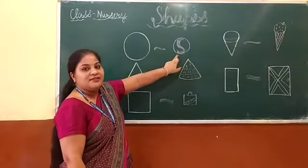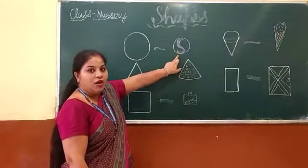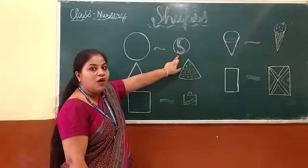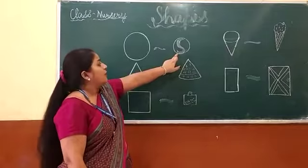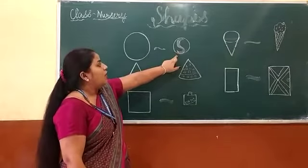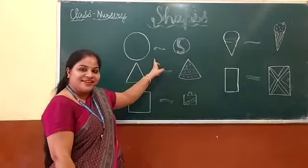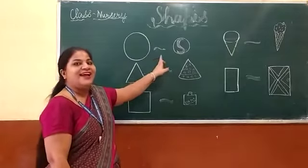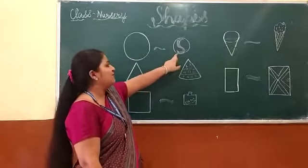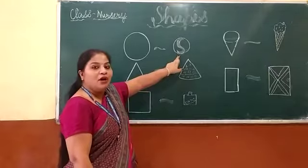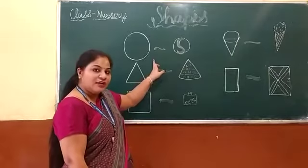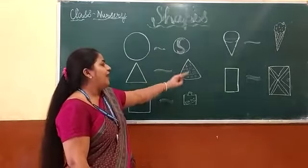What is it? This is a ball. Ball looks like a circle. Very good students, ball looks like a circle.